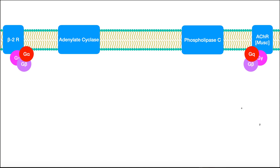You're welcome to skip this initial part of the video, but what we want to do first is really talk about the normal events of these biosignaling pathways — what happens without pharmacological intervention. The two receptors that we're going to be looking at here are the beta-2 receptor, which is an adrenergic receptor, normally considered for epinephrine.